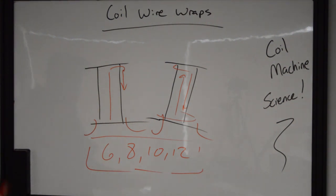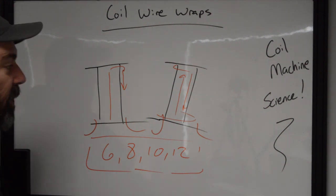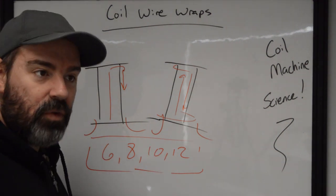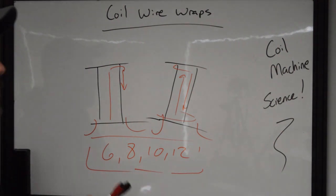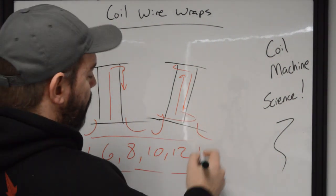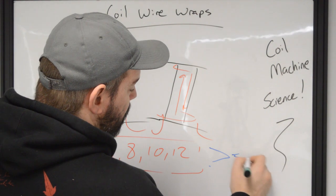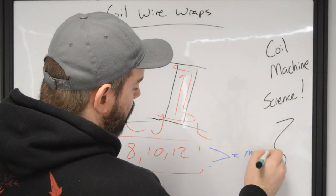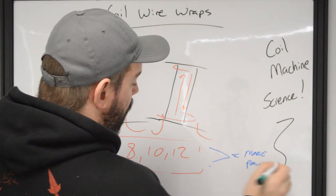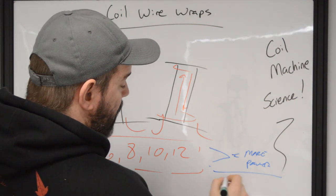Now, the amount of wraps equals how strong that magnet is going to fire. It's like a motor. What do you think about a motor? The more cylinders in an engine, the more horsepower it can produce, simple, right? So the greater amount,